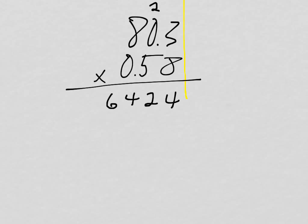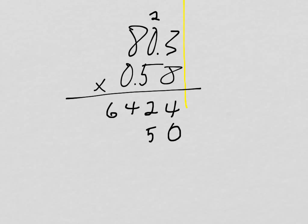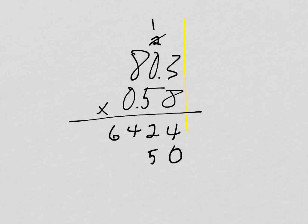For the second partial product, we're multiplying with that five. The first thing we need to do is mark that we've moved up a place value by adding a zero. Then five times three is 15, carry the one. Five times zero is zero, plus one is one. Five times eight is 40. I don't need to do anything with that zero in 0.58, because zero times anything is zero. That would just be a whole empty line of zeros, pointless to go through.